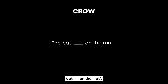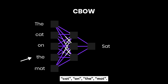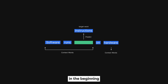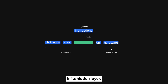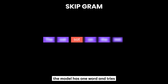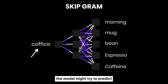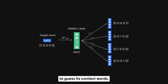For example, in the sentence 'the cat ___ on the mat', the model should predict 'sat' from the context words: the, cat, on, the, mat. CBOW treats the surrounding context words as input and tries to predict the target center word. To succeed, the model must internalize contextual clues, which causes it to learn meaningful word vectors in its hidden layer. In Skip-gram, the problem is flipped: given one word, the model tries to predict the words likely to appear around it. For example, given the word 'coffee', the model might try to predict morning, mug, or bean.